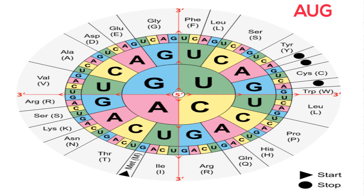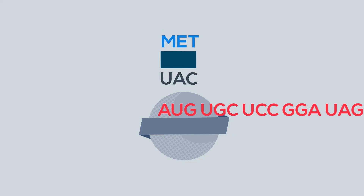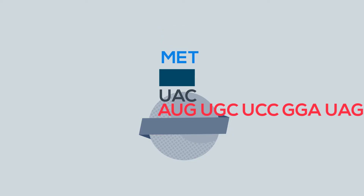AUG is the start triplet, and UGA, UAA, or UAG is the stop signal. Transfer RNA found in the cytoplasm moves to the ribosome and pairs up to the correct codon.